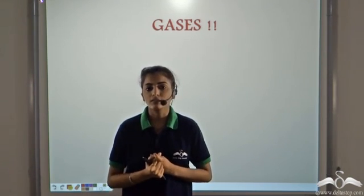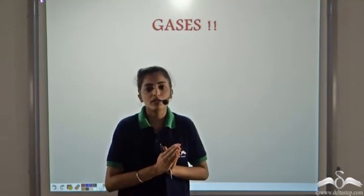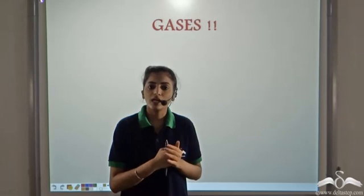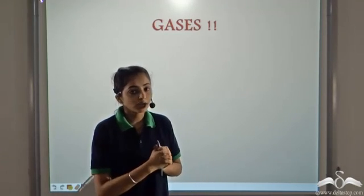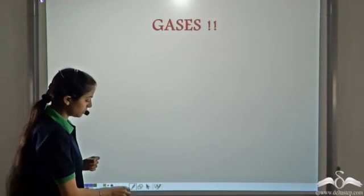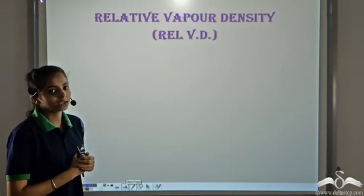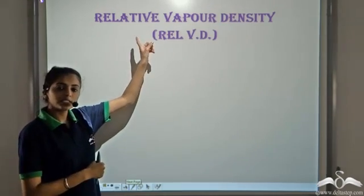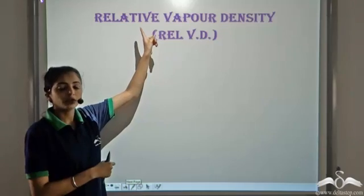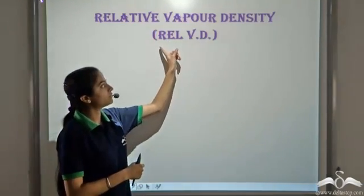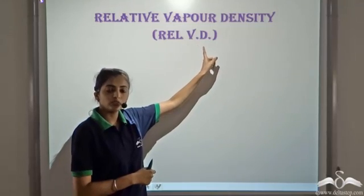One important property is density. It's not very easy to calculate or measure the density of a gas, so its density is calculated by comparing it with some other gas. This is why we find the relative vapour density of a gas, abbreviated as RVD.